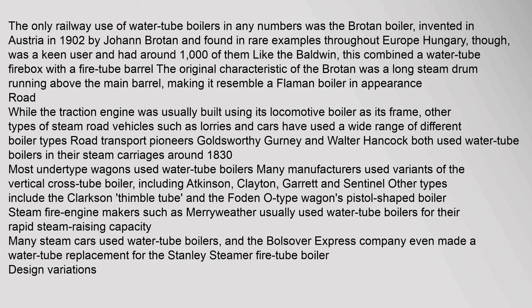Other types of steam road vehicles such as lorries and cars used a wide range of different boiler types. Road transport pioneers Goldsworthy Gurney and Walter Hancock both used water tube boilers in their steam carriages around 1830. Most undertype wagons used water tube boilers. Many manufacturers used variants of the vertical cross tube boiler, including Atkinson, Clayton, Garrett, and Sentinel. Other types include the Clarkson Thimble Tube and the Foden O-type. Steam fire engine makers such as Meriwether usually used water tube boilers for their rapid steam raising capacity. Many steam cars used water tube boilers.